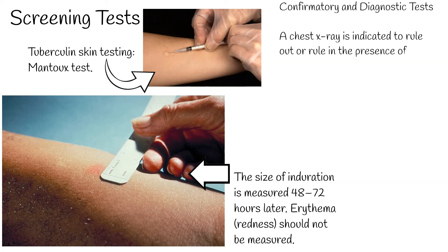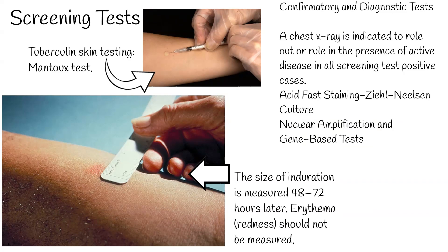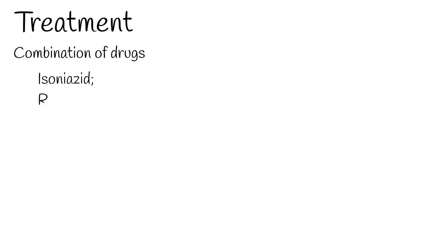Treatment of confirmed tuberculosis requires a combination of drugs. Combination therapy is always indicated, and monotherapy should never be used for tuberculosis. First-line medications include isoniazid, rifampicin, rifabutin, rifapentine, pyrazinamide, and ethambutol.